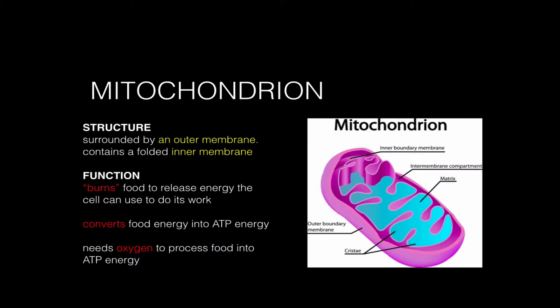We're going to start with the mitochondrion. The structure of the mitochondrion is basically shaped like a peanut or a tic-tac. It's got an outer membrane surrounding an inner membrane that is folded up. The mitochondrion has an inner area and an outer inner area inside of these two membranes. The function of the mitochondria is literally to burn food energy to release energy that the cell can use to do work.